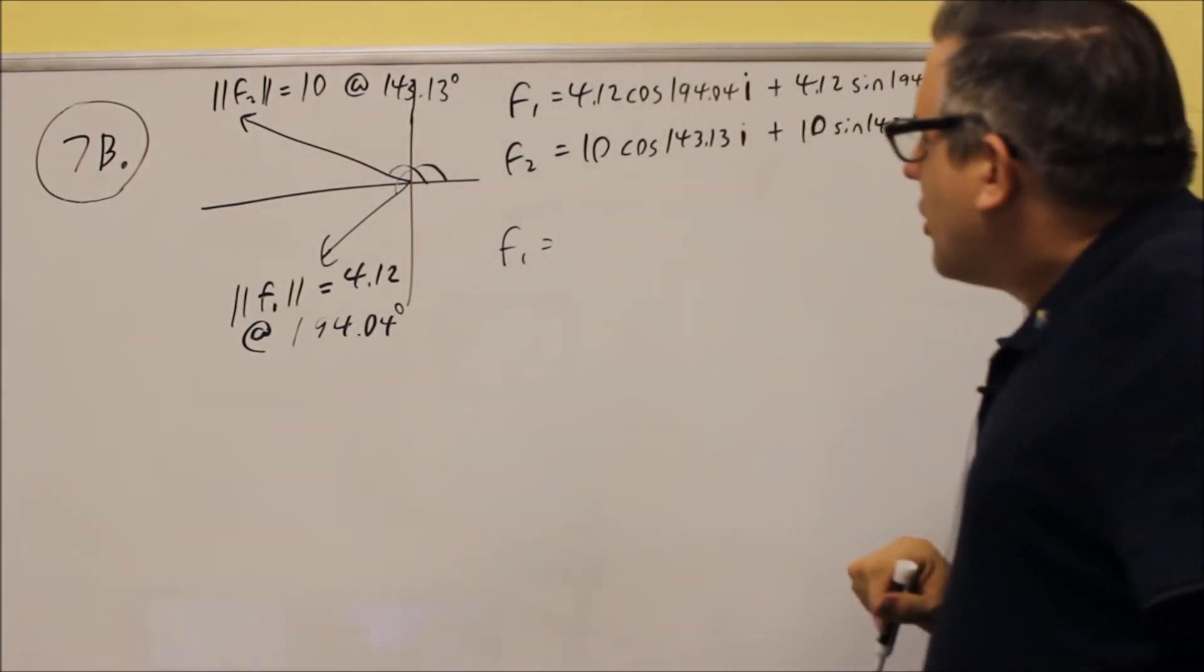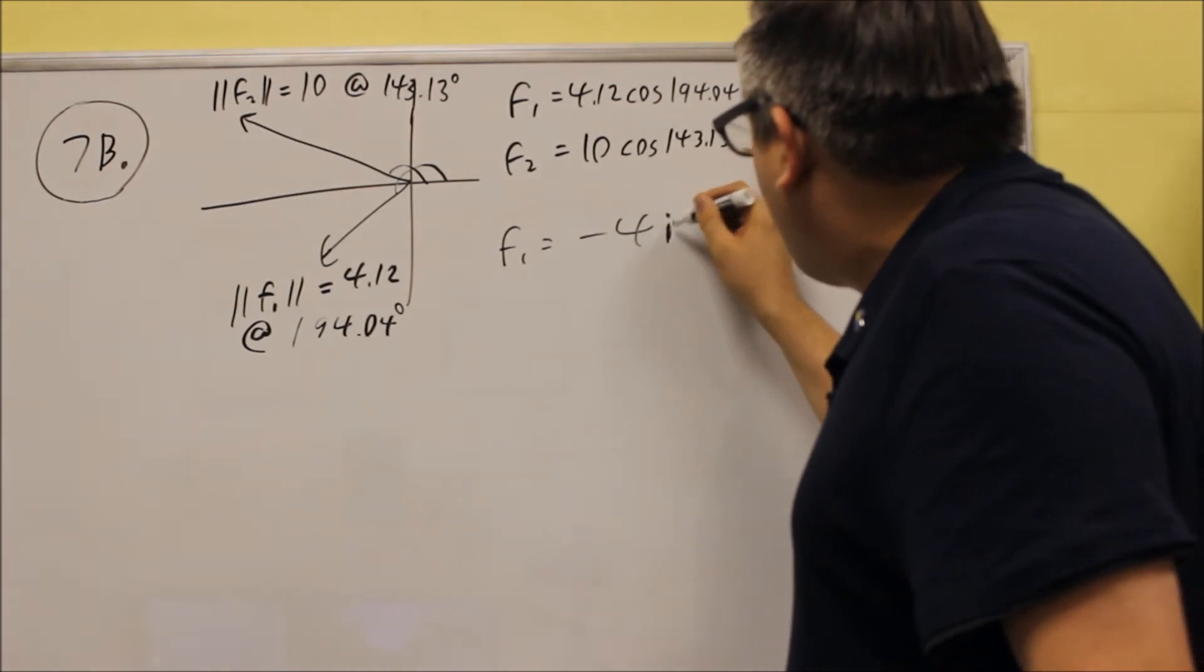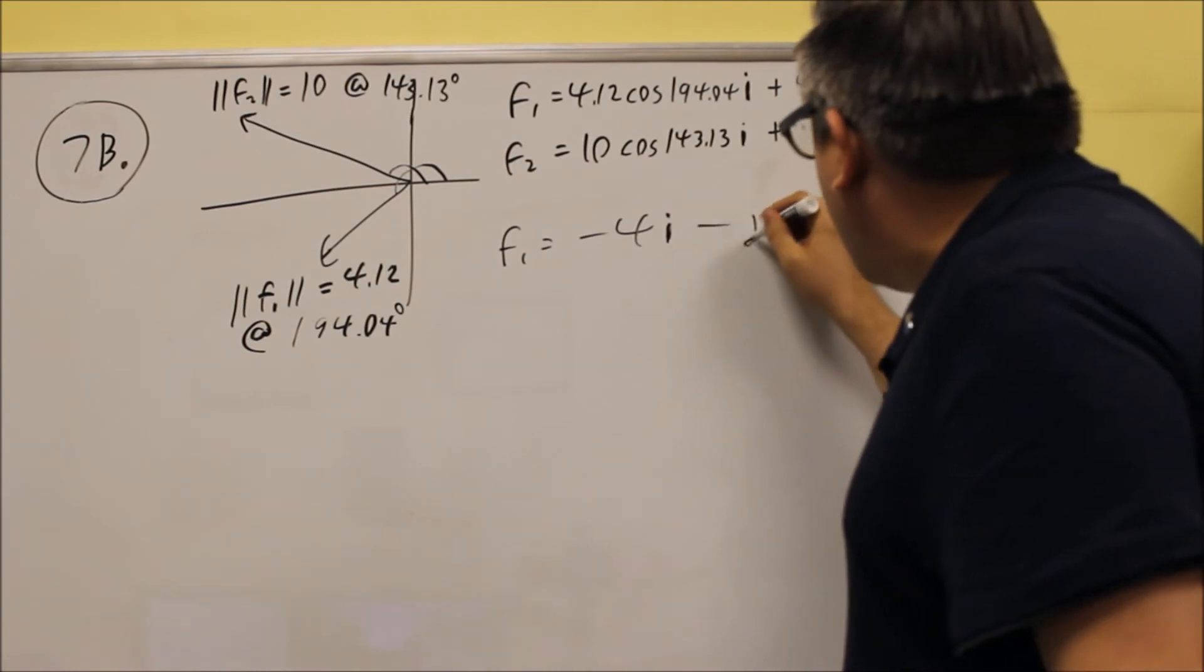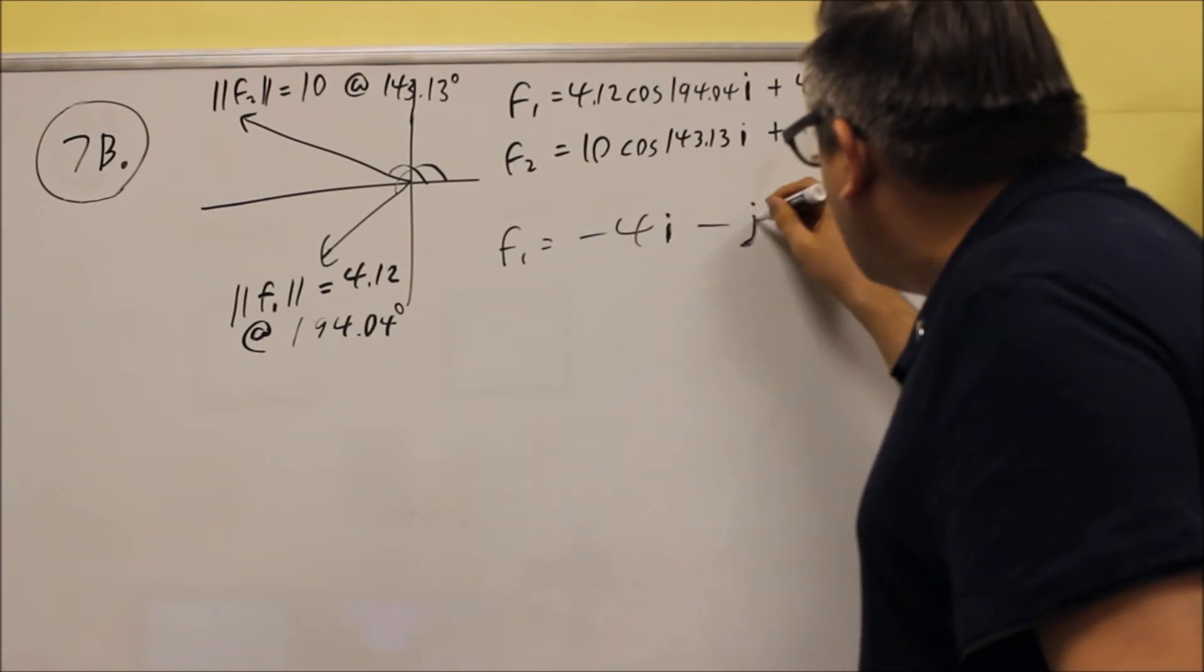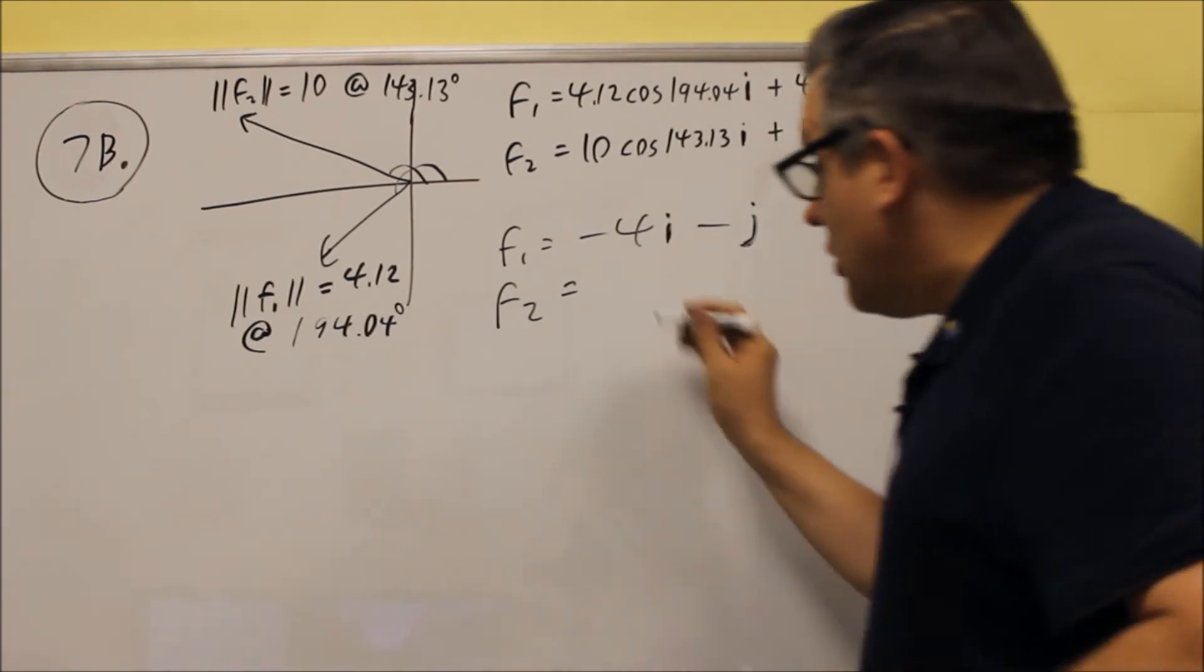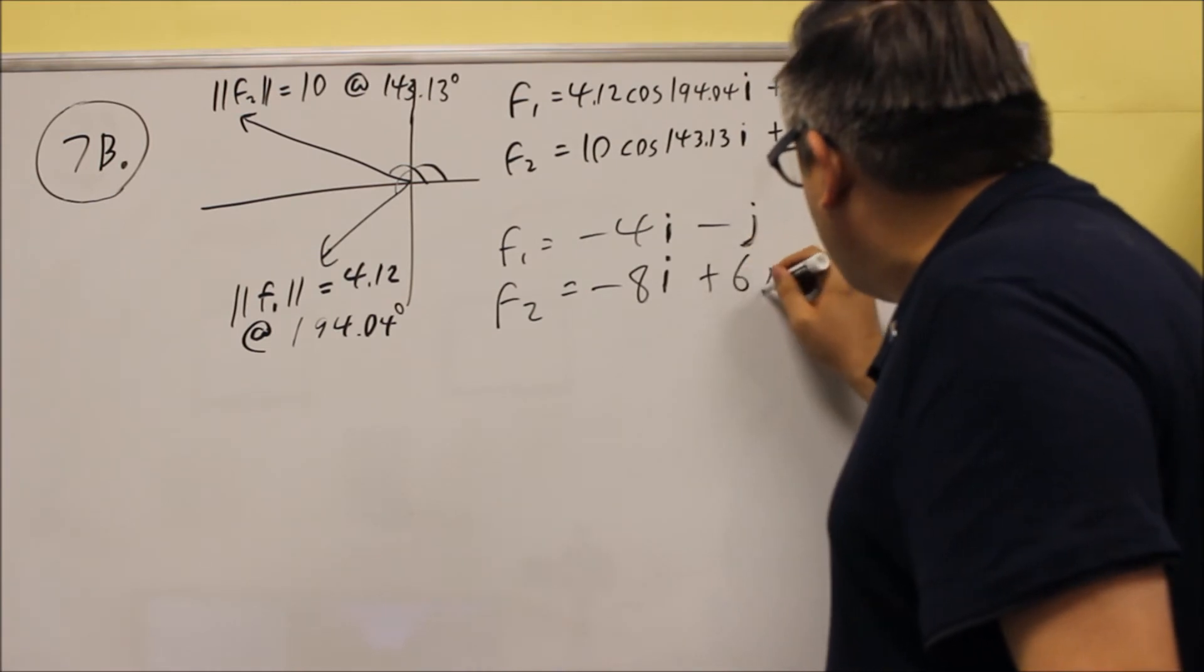The way the numbers are set up here, we actually end up with whole numbers down here when we write that out. So for this, if we take 4.12 cosine of 194, we actually just get negative 4i is what it turns out to be. This one comes out to be negative j when you put that in. And then for F2, that comes out to be negative 8i, and then plus 6j.